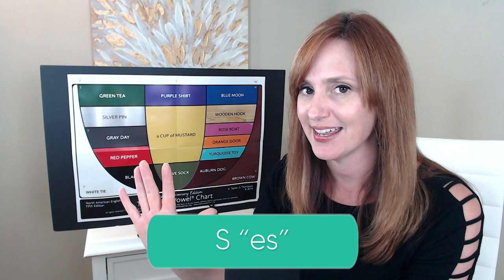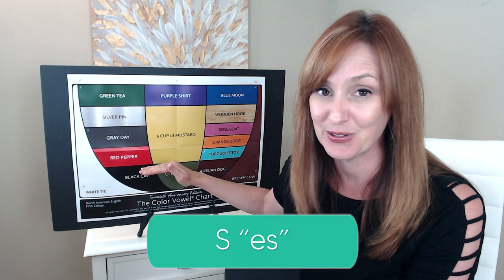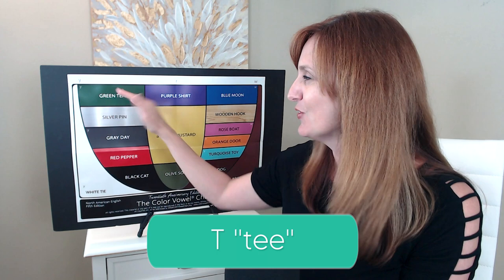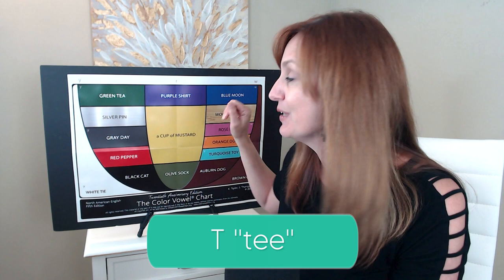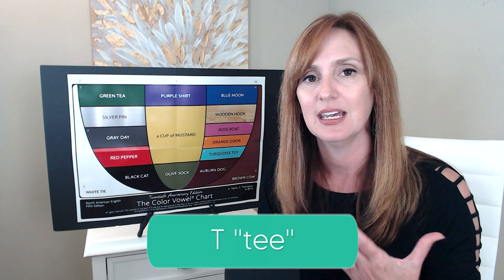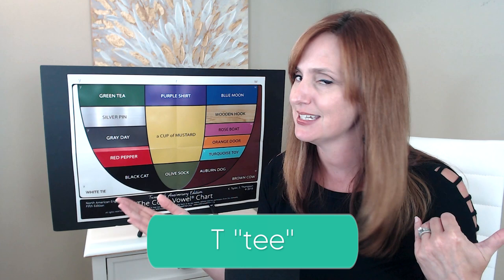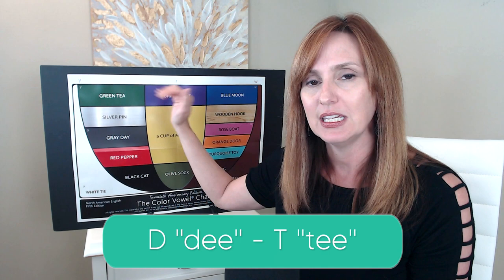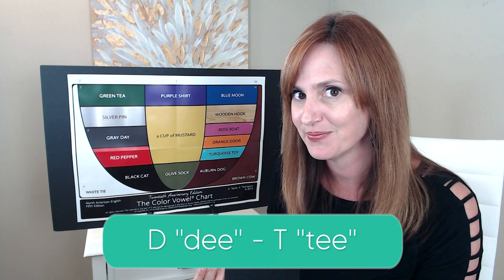S. Red pepper S. We start with our red pepper vowel sound and move into the S consonant. S. T. Green T, T. Here we have our T consonant moving into that green T, E vowel. The T consonant is another air puff consonant — a very subtle puff of air — but without it, it may sound more like D. Green T, D versus Green T, T. Do you hear the difference?